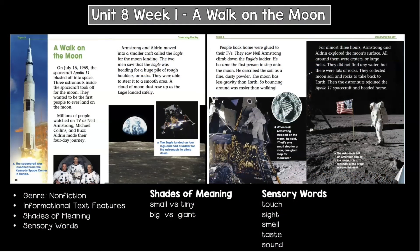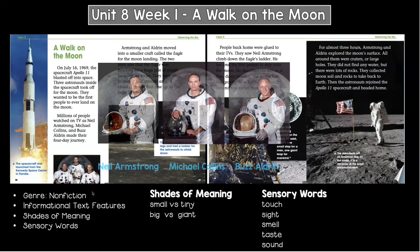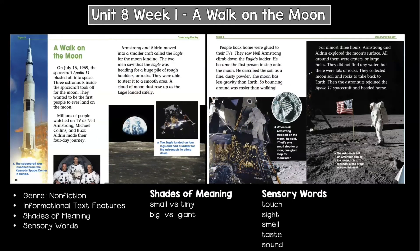Hi boys and girls, today you read a story called A Walk on the Moon. This story was about the first US trip to the moon. There were three astronauts that went on the voyage to the moon: Neil Armstrong, Michael Collins, and Buzz Aldrin. This was a big accomplishment for the United States.